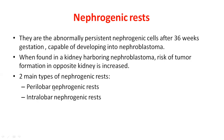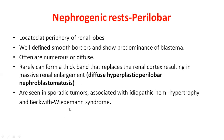Perilobar nephrogenic rests, as the name implies, are located around the peripheral region of the cortex. Because they are on the periphery, they have distinct borders — we can clearly demarcate the blastema cells from the normal developing kidney. Sometimes they acquire a hyperplastic nature, increasing massively in size, making the kidney non-functional, recognizable on radiology. This phenomenon is known as diffuse hyperplastic perilobar nephroblastomatosis, and these rests are mostly associated with sporadic tumors, idiopathic hemihypertrophy, or Beckwith-Wiedemann syndrome.